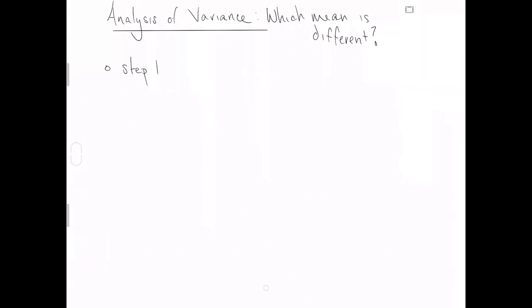Step one: calculate p-value and reject H0. If you have calculated the p-value and rejected H0, then and only then, can you ask which mean is different from the rest?